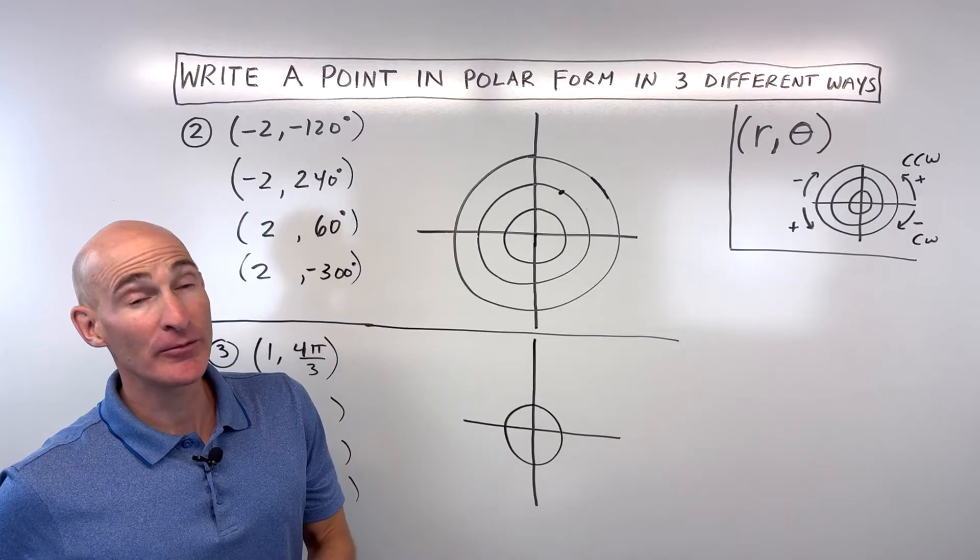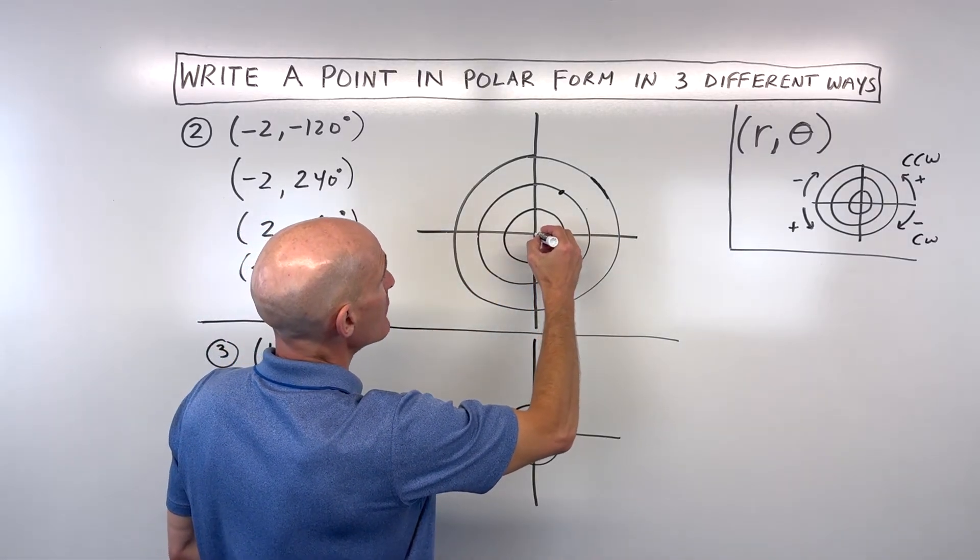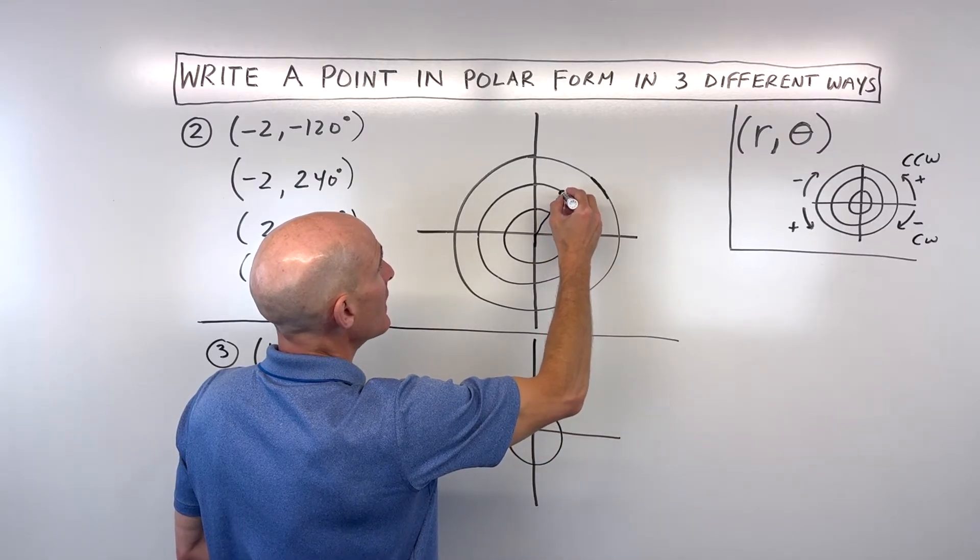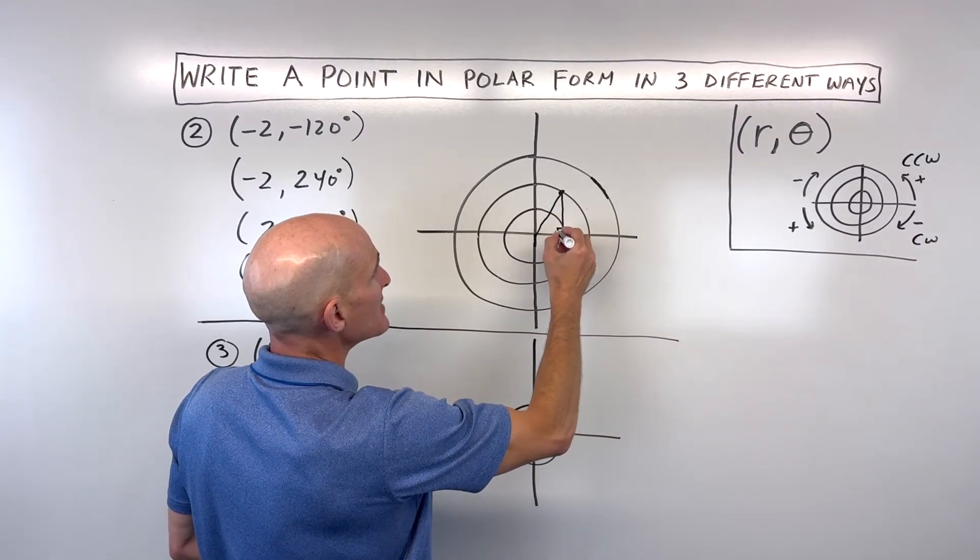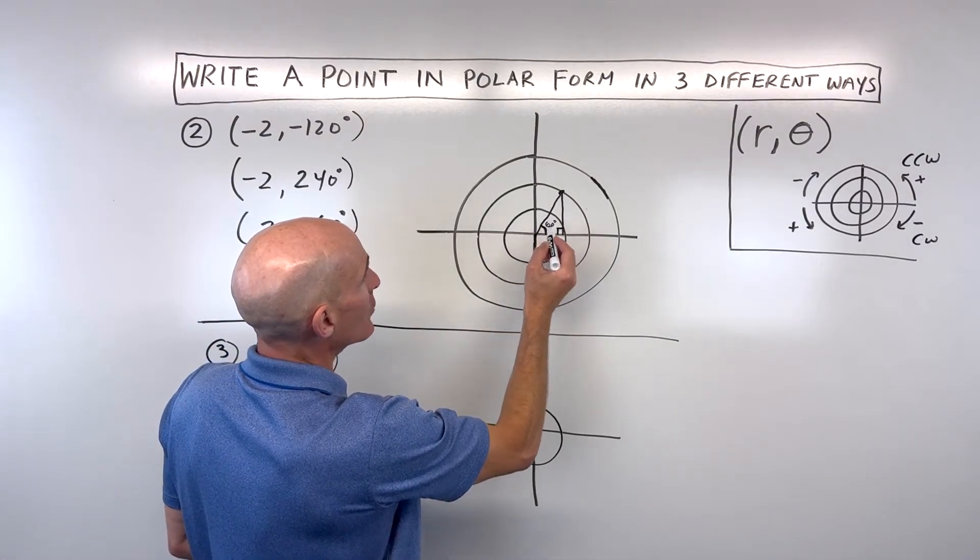Now, sometimes you might be thinking, how are you getting all these angles? One way to look at this is, remember when we talked about the unit circle? Remember how we drop a perpendicular to the x axis and look at a reference angle? This reference angle here is a 60 degree angle.